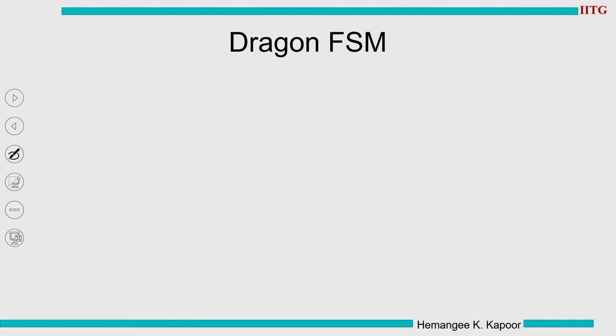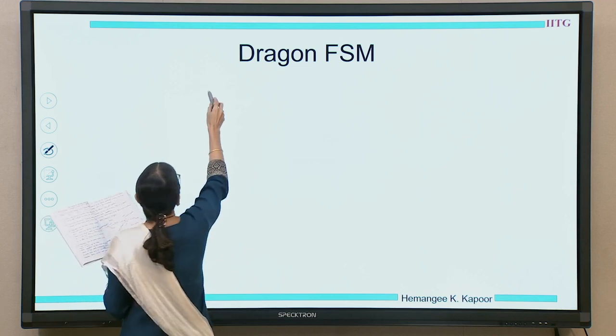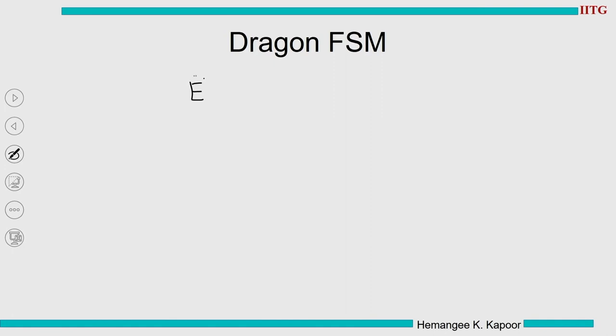Now we start drawing the Dragon FSM. The convention is: black for states, blue for things coming from the processor, and red for things coming from the bus. The implicit I state is not drawn since it is implicit. These are the four states.